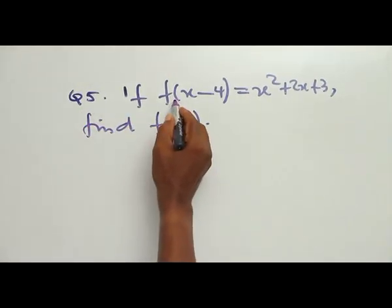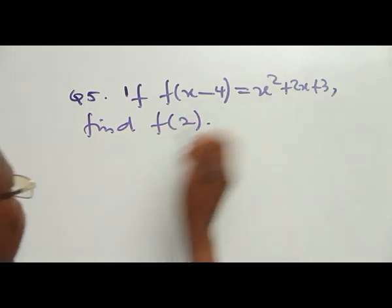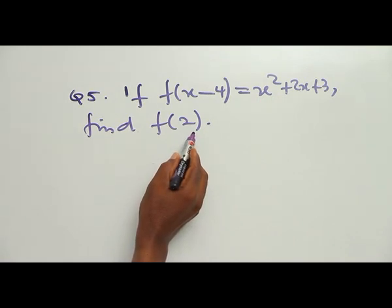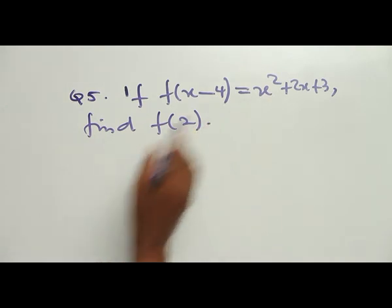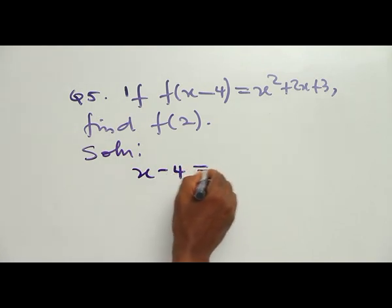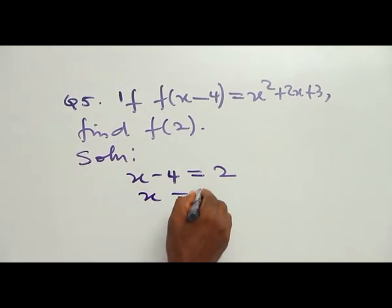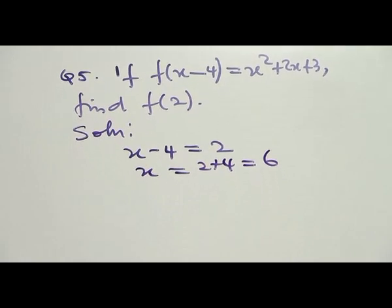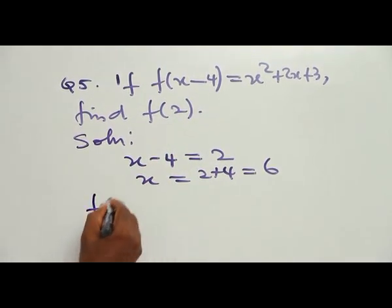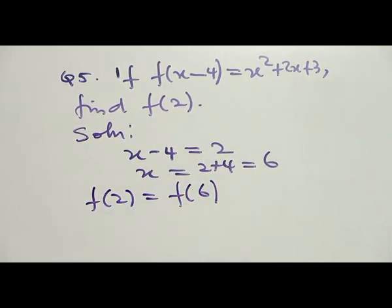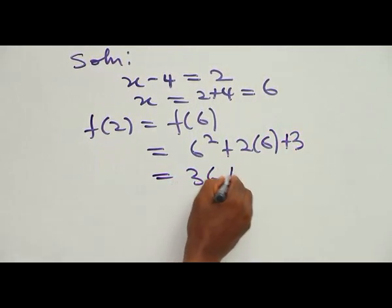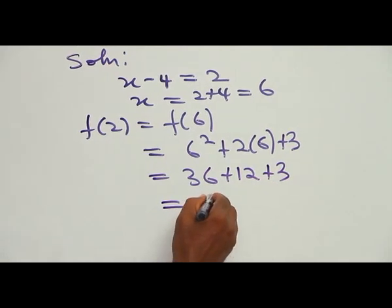Example 5: If F(S − 4) = S² + 2S + 3, find F(2). You cannot directly substitute 2 into the expression. First, set S − 4 = 2, so S = 6. Then F(2) = F(6 − 4) = 6² + 2(6) + 3 = 36 + 12 + 3 = 51.